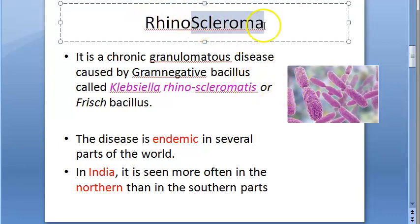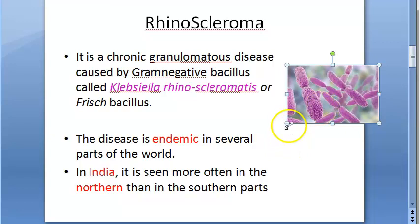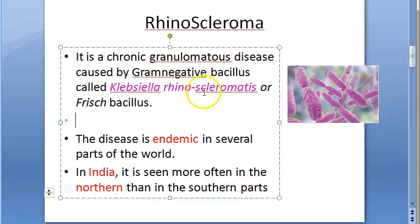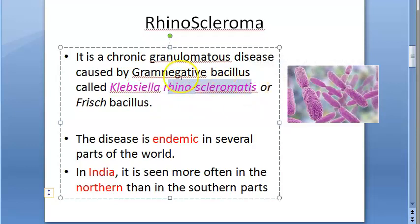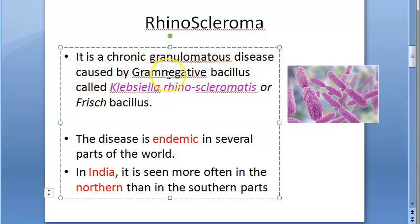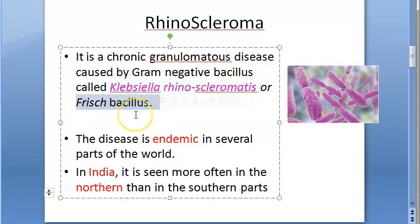Rhinoscleroma involves the nose being affected by Klebsiella bacteria — specifically Klebsiella rhinoscleromatis, a gram-negative bacteria. The name of the bacteria itself is 'rhinoscleromatis.' Rhinoscleroma is a chronic, long-running granulomatous disease caused by this gram-negative bacillus, also known as Frisch bacillus.